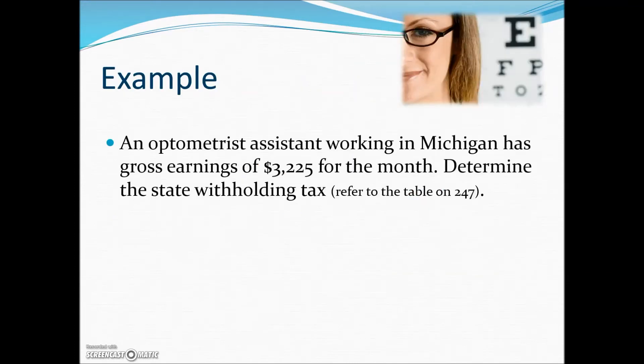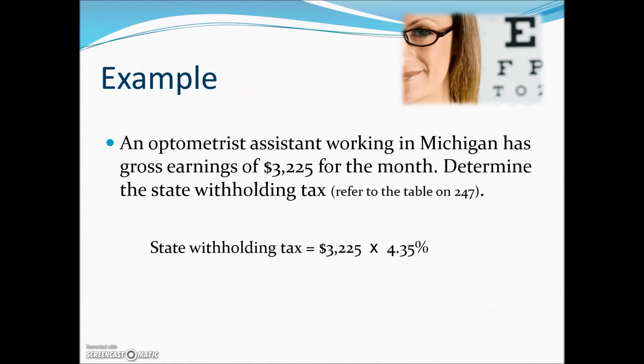We have an example of an optometrist's assistant working in Michigan with gross earnings of $3,225 for the month. To determine the state withholding tax, we look up Michigan's tax rate, which is 4.35% income tax. Multiplying that rate by her wages gives us the amount of tax that would be withheld from her gross wages and sent to the Michigan Department of Revenue.